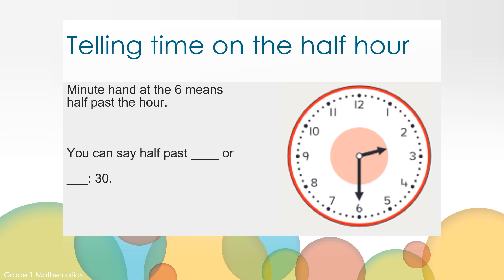Look again at this analog clock. The short hand counts the hours and the long hand counts the minutes. When the minute hand is pointing at the 6, it is half past an hour. When the minute hand shows a half past, we can say this is half past the hour or blank 30. What do you notice about the hour hand when the minute hand is pointing at the 6?